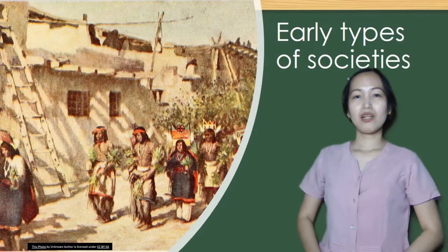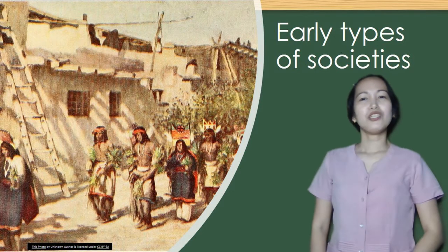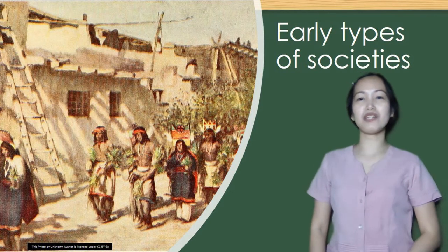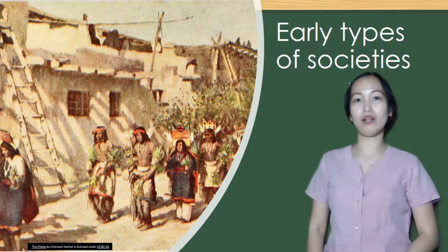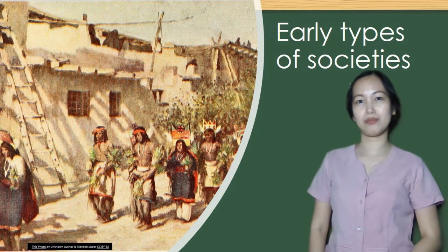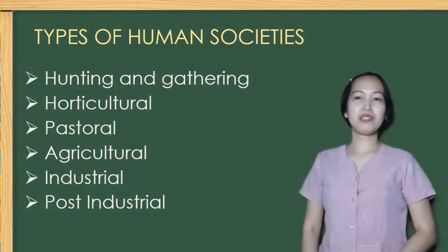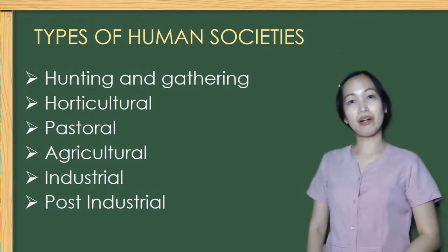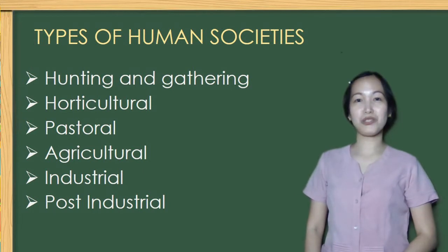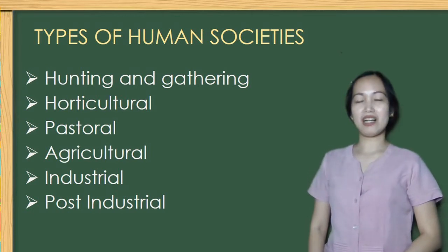Have you ever wondered what society was like before your lifetime? During the course of human history, people have organized themselves into various types of societies depending upon their level of technology and their related methods of subsistence. As early civilization arose, six types of human societies developed: hunting and gathering, horticultural, pastoral, agricultural, industrial, and post-industrial.